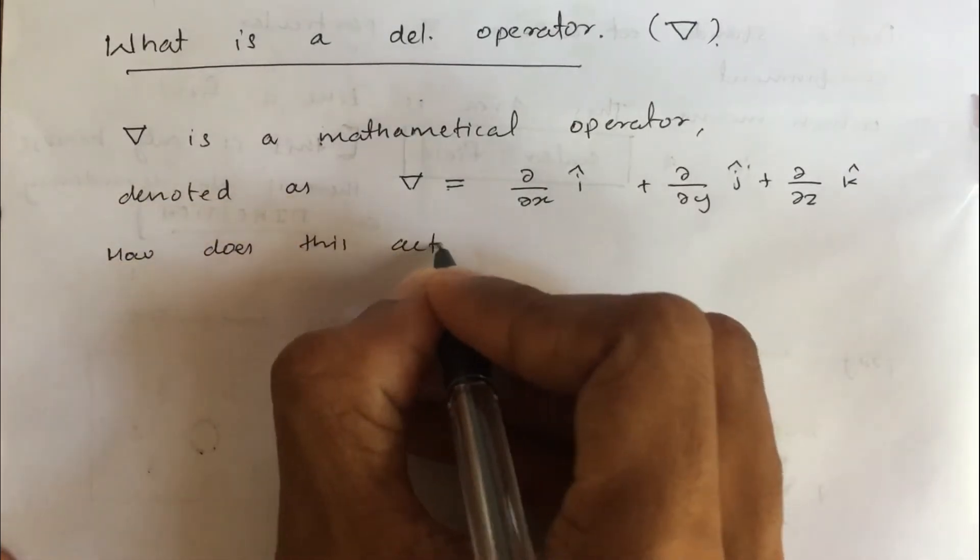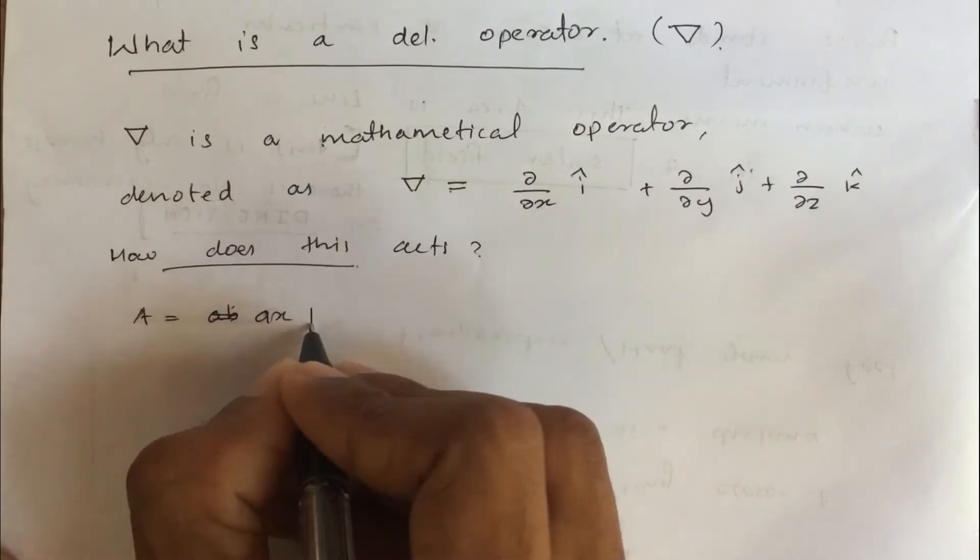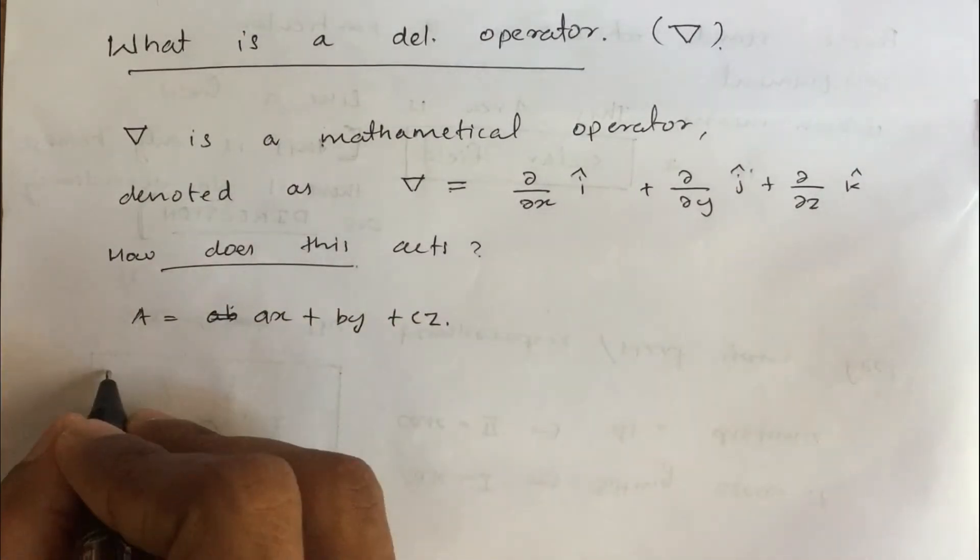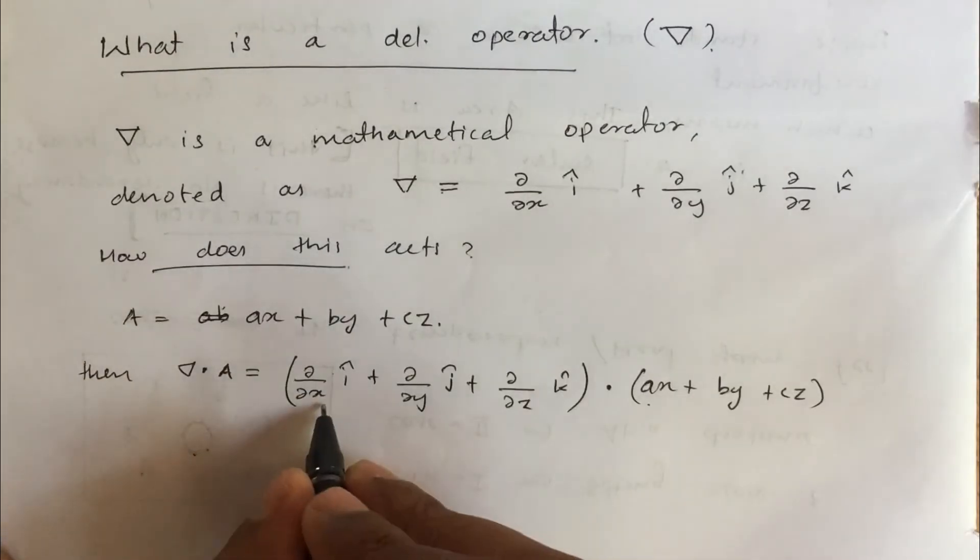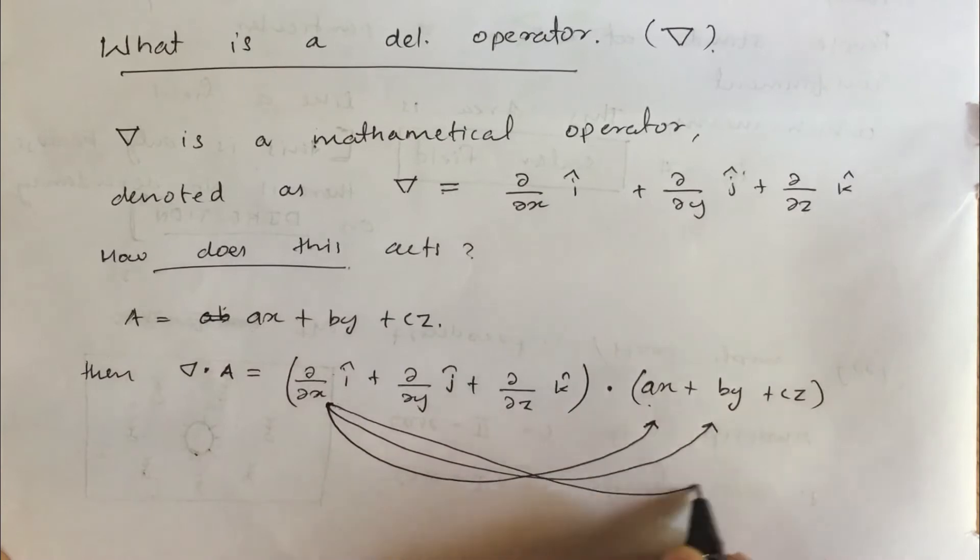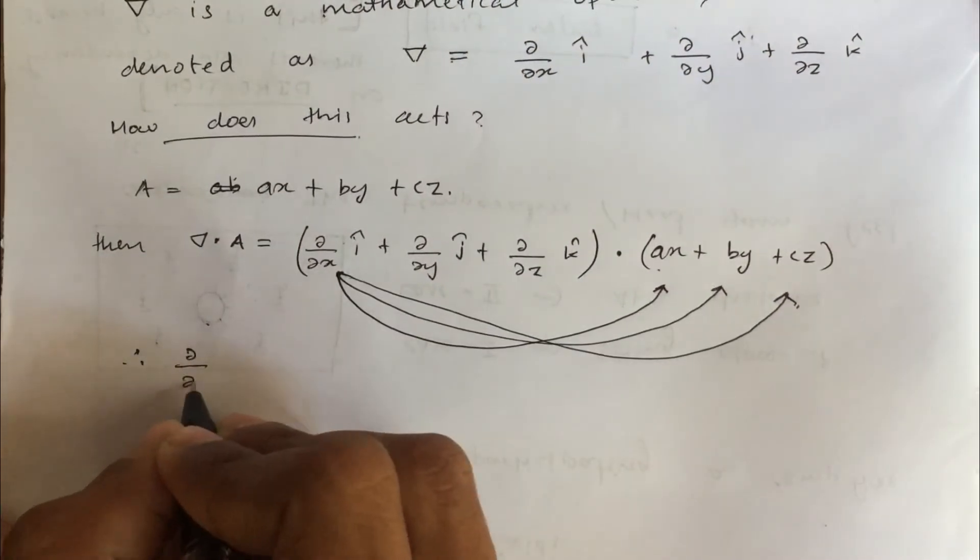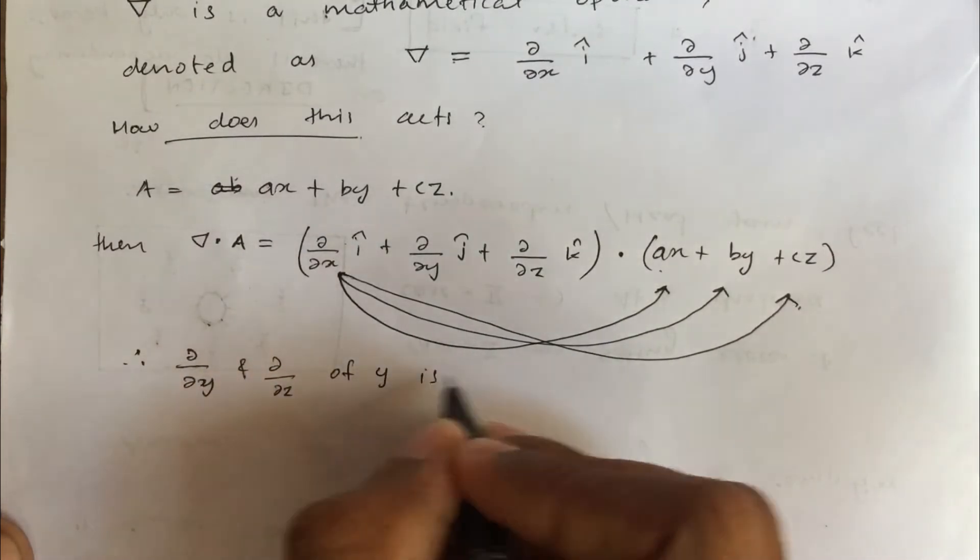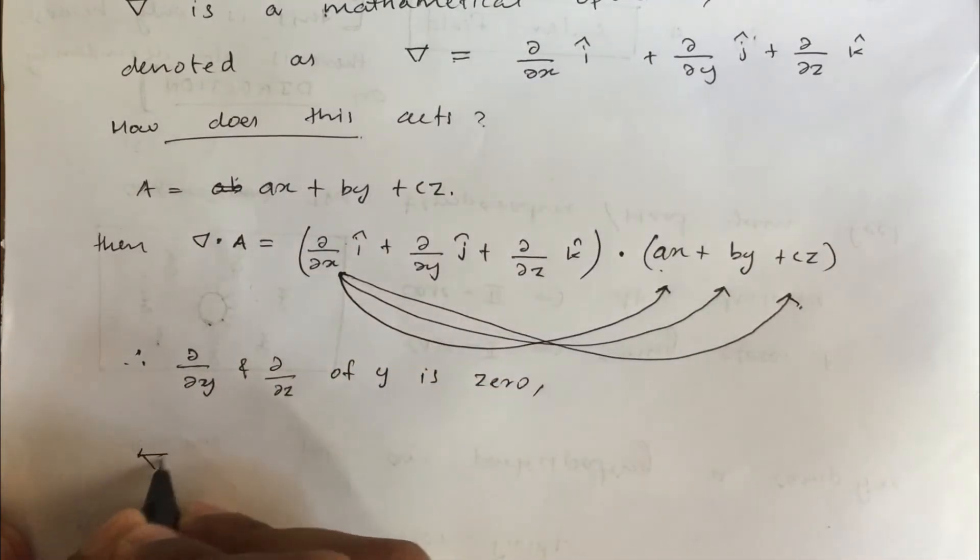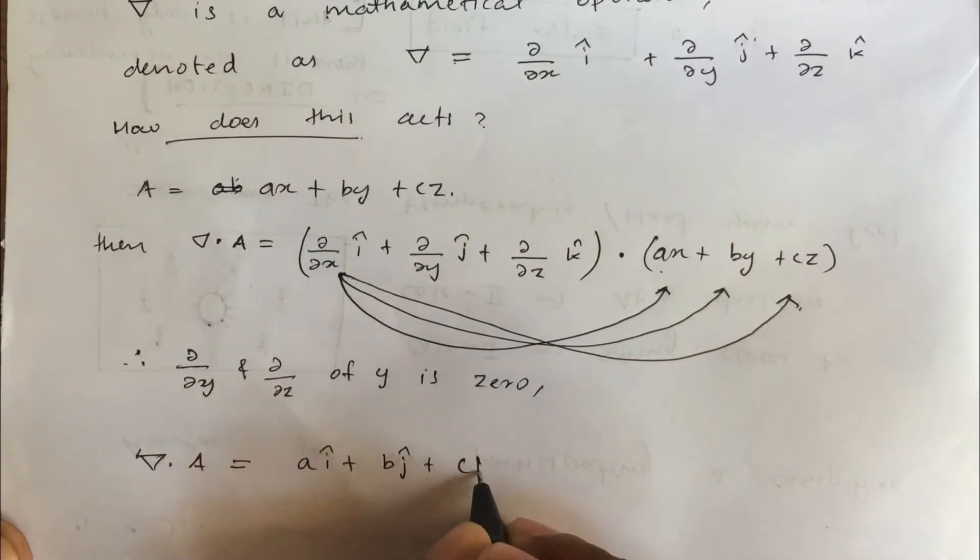Then how does it act? Consider A equal to ax plus by plus cz. Taking del dot A, we have to take dot products of all the combinations. Then del dot A is a i plus b j plus c k.